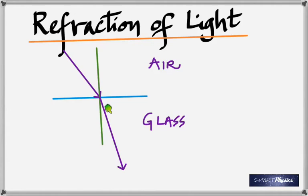Going from less dense to more dense, light bends towards the perpendicular. If it's going in the opposite direction — from more dense to less dense — it bends away from the perpendicular. The angle of incidence and the angle of refraction will not be equal to each other. The law of refraction is called Snell's law.